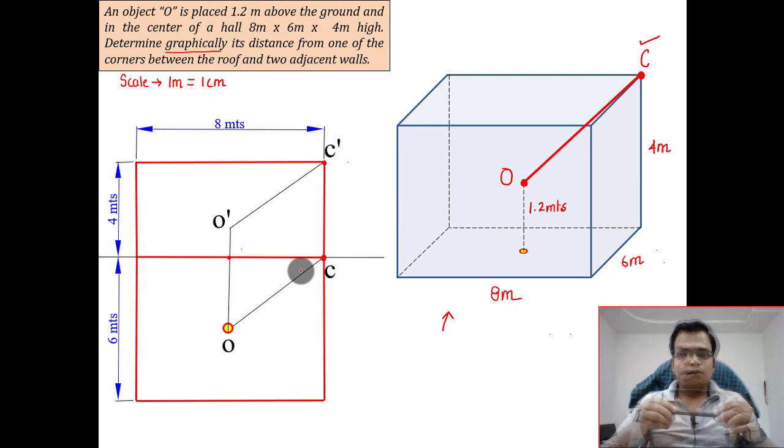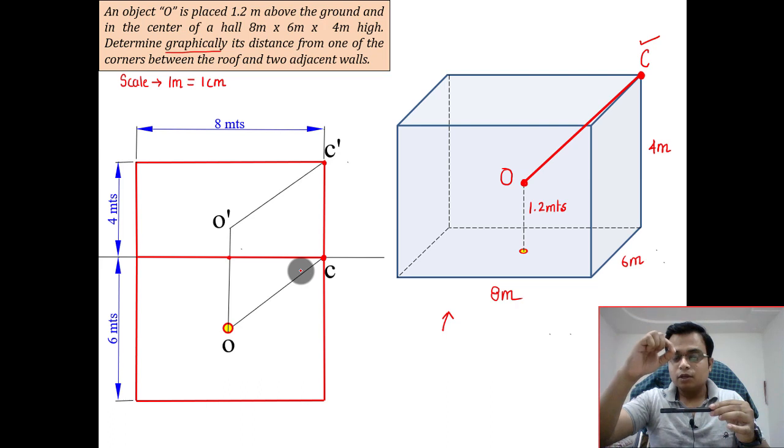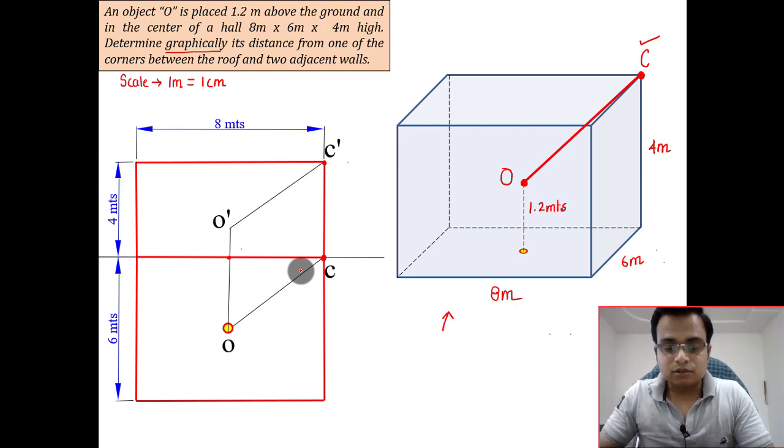Here is the idea: whenever you want to see the true length from the front, rotate the top view and make it parallel to XY. In the same manner, whenever you want to observe the true length from the top, rotate the front view and make it parallel to XY. This is basically the logic that I'm going to be applying to find the true length between this object O and this corner C.